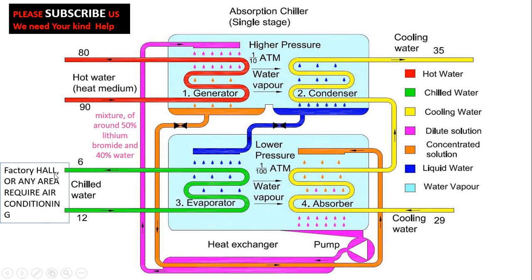This temperature difference means we extracted a good cooling effect from the coil. Now let me explain the complete procedure. There are four main components of an absorption chiller: number one is the generator, number two is the condenser, number three is the evaporator, and number four is the absorber.